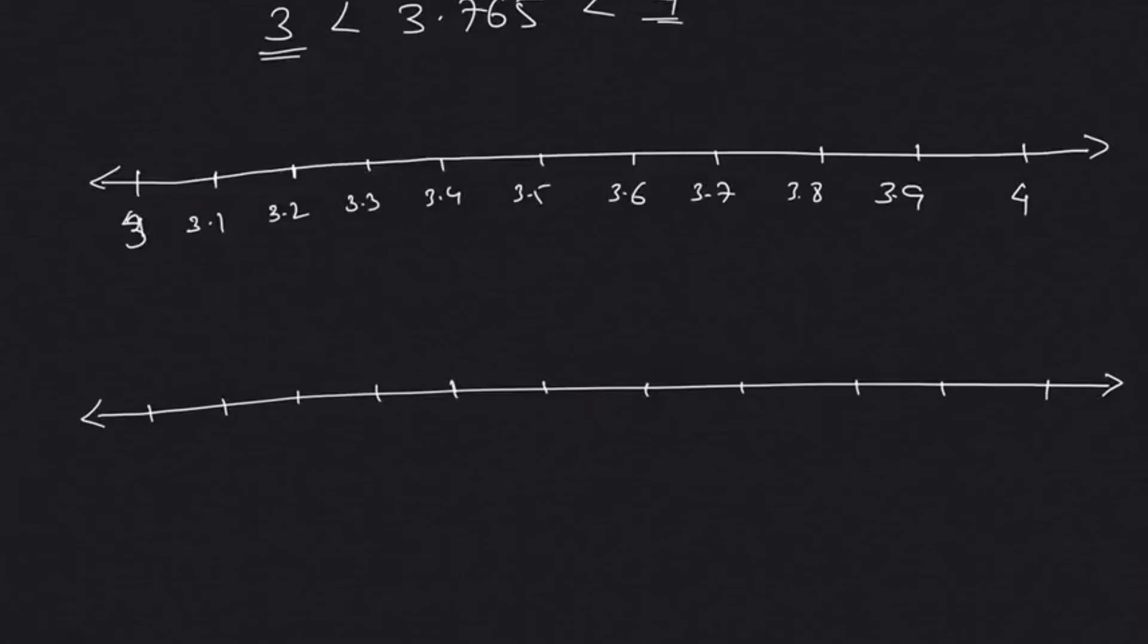Then 3.765 will be between 3.7 and 3.8. So we expand 3.7 and 3.8. It's going to be between 3.7 and 3.8, so we expand that. That's why we call it successive magnification method - we keep magnifying.